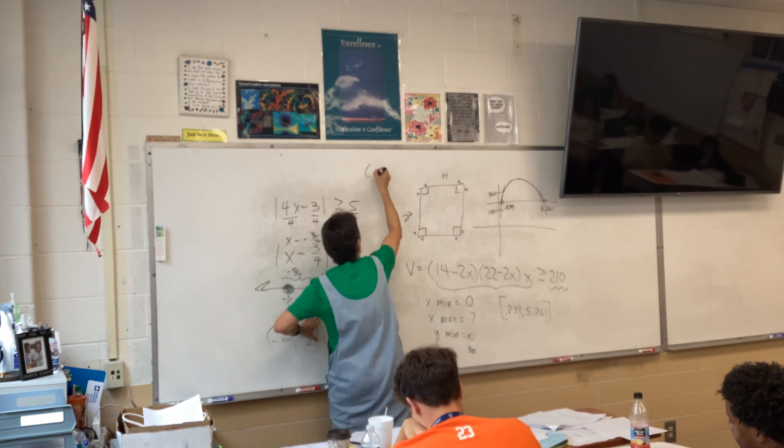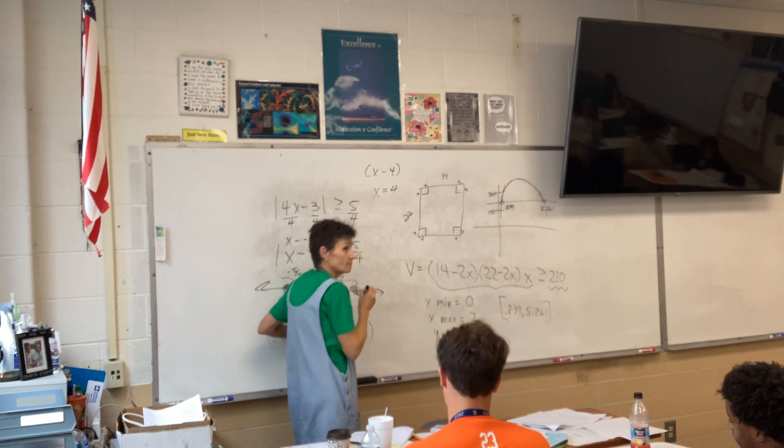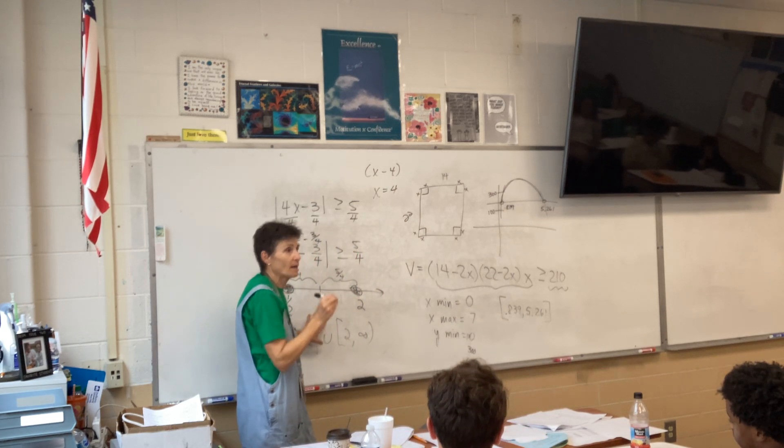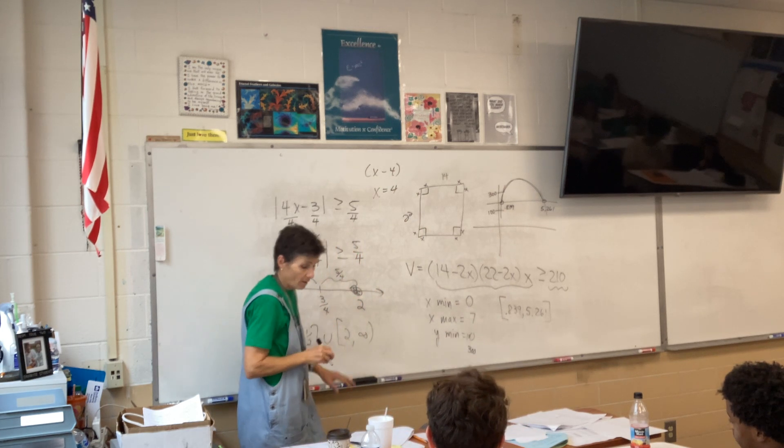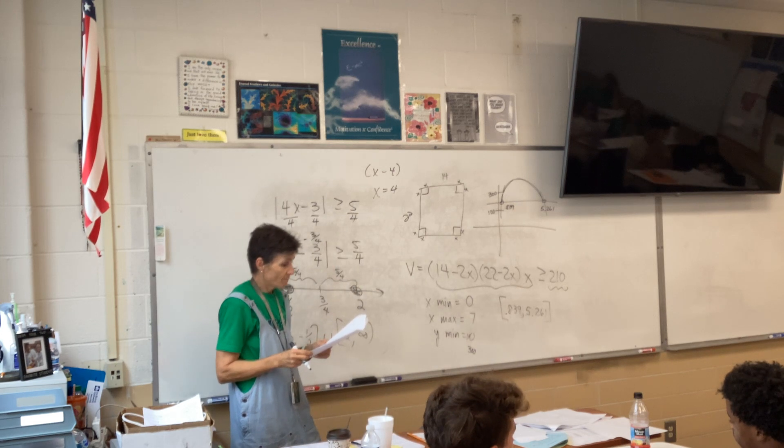So, when this said x minus 3 fourths, when I bring it out, it's going to be a positive 3 fourths. Just like when you solve your equation, and you get this, don't you say x equals 4? Yeah, same kind of stuff. All right, who else?